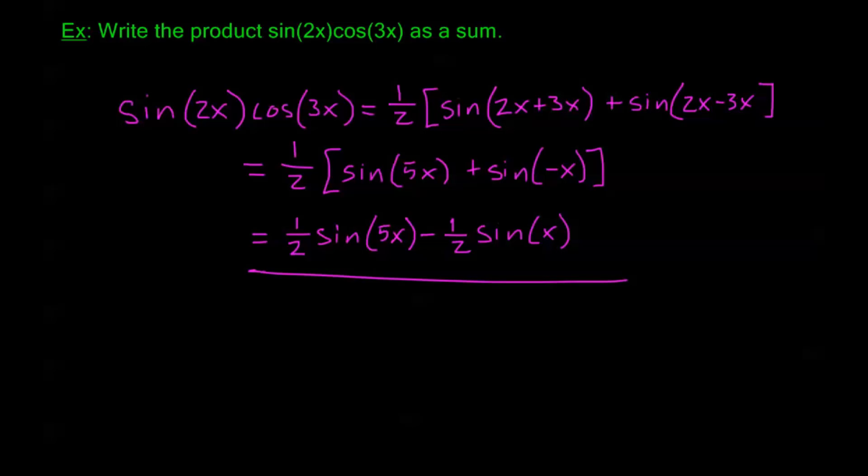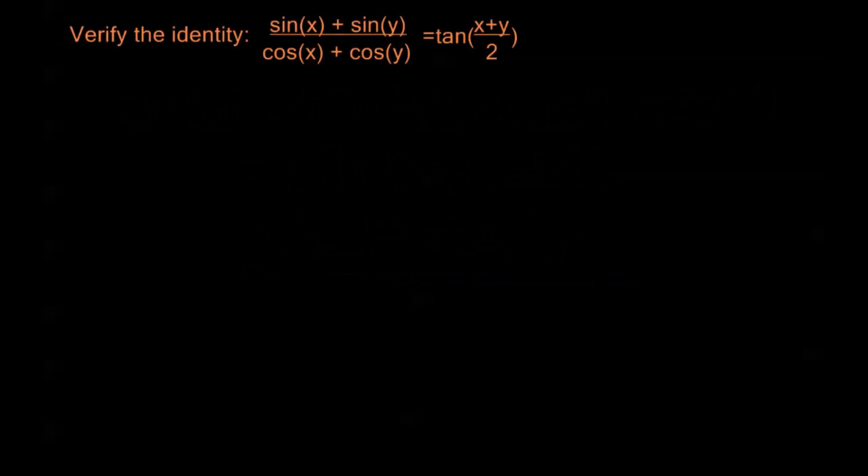All right, let's look at one more example before we finish up this section. Verify the identity sine x plus sine y over cosine x plus cosine y is equal to tangent of x plus y over 2. So we see we have these sums on the top and the bottom. Here we just have a single term. So we should think to ourselves, well, maybe this sum-to-product formula would work here. We're actually going to have to use a couple of them. Now taking sine x plus sine y by our formula,